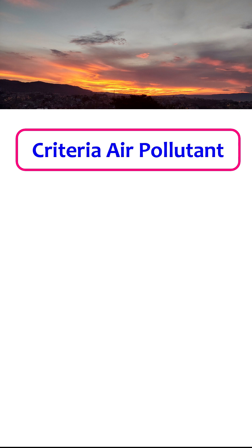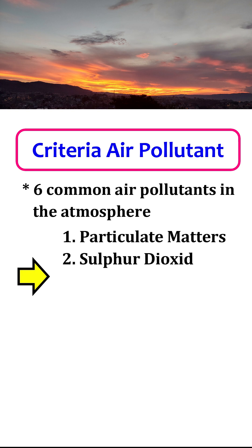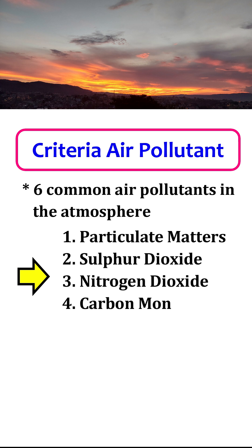Criteria air pollutants refer to the group of six commonly found air pollutants in the atmosphere. They are particulate matters, sulfur dioxide, nitrogen dioxide, carbon monoxide, ozone, and lead.